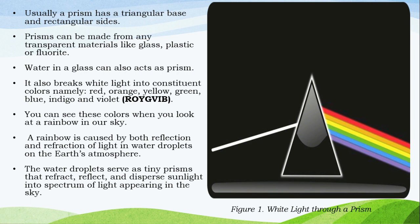Karaniwan, ang isang prism ay may isang tatsulok na base at hugis-pariyaba na mga gilid. Ang prism ay maaaring gawin mula sa anumang mga transparent na materiales tulad ng baso, plastik, o fluoride. Ang tubig sa isang baso ay maaari ring gawin bilang prism. Pinaghihiwalay nito ang puting ilaw sa mga kulay katulad ng pula, kahel, dilaw, verde, asul, at lila. Maaari mong makita ang mga kulay na ito kapag tinitingnan mo ang bahaghari sa langit. Ang isang bahaghari ay sanhi ng parehong refleksyon at refraction ng ilaw sa mga patak ng tubig sa impapawid ng daigdig. Ang mga patak ng tubig ay nagsisilbi bilang maliliit na prism na nagre-refract, nagre-reflect, at nagkakalat ng sinag ng araw sa ispektrum ng ilaw na lumilitaw sa kalangitan.